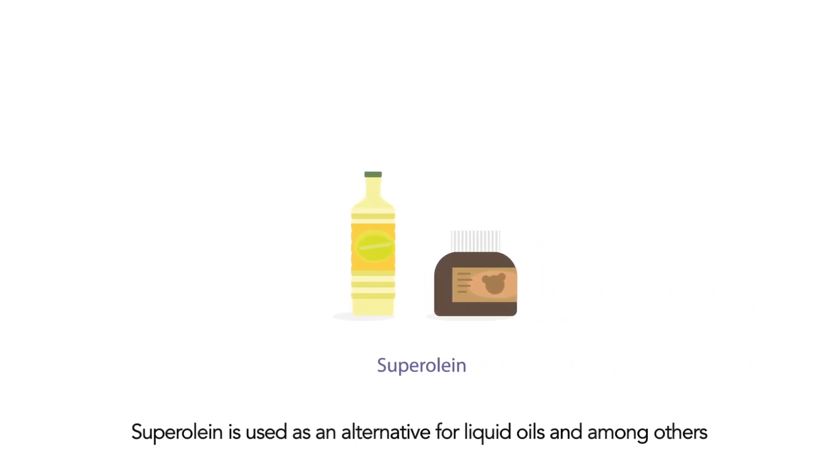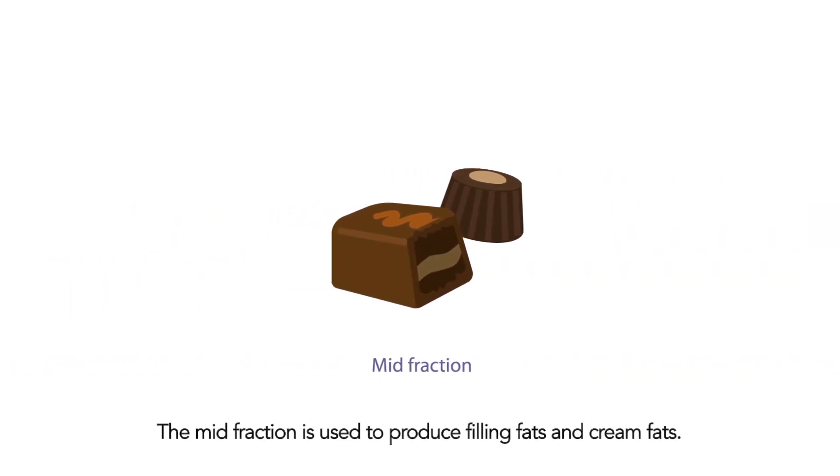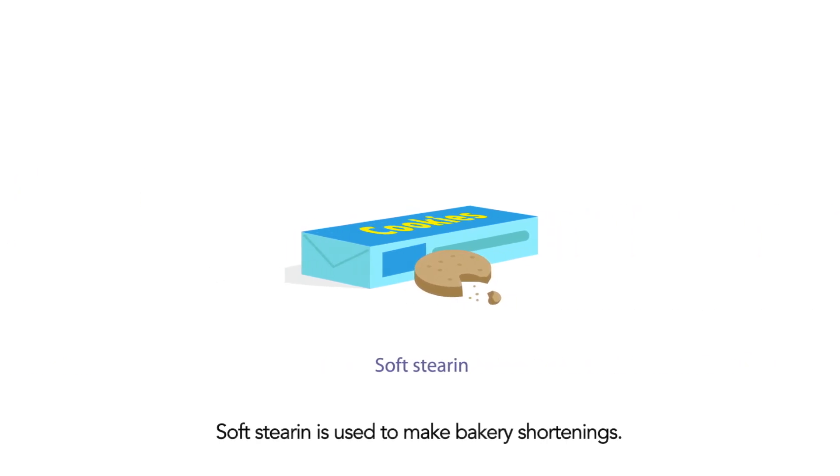Superolein is used as an alternative for liquid oils and among others used in chocolate spreads. The mid-fraction is used to produce filling fats and cream fats. Soft stearin is used to make bakery shortenings.